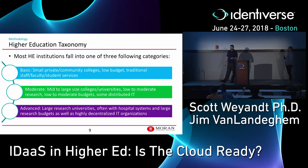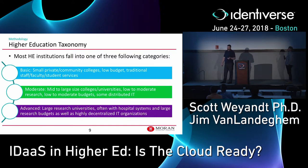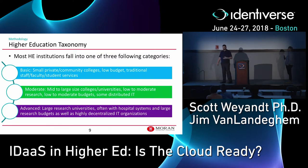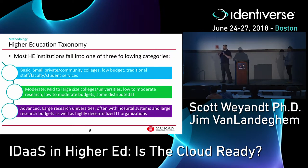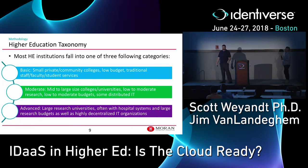The moderate category represents mid to large size colleges and universities. They have a bit more budget but also more complexity because they have more mature processes and more specific needs. Their distributed IT is usually somewhat centralized — there's usually a central IT org but it's not fully controlled there; other pockets exist elsewhere.